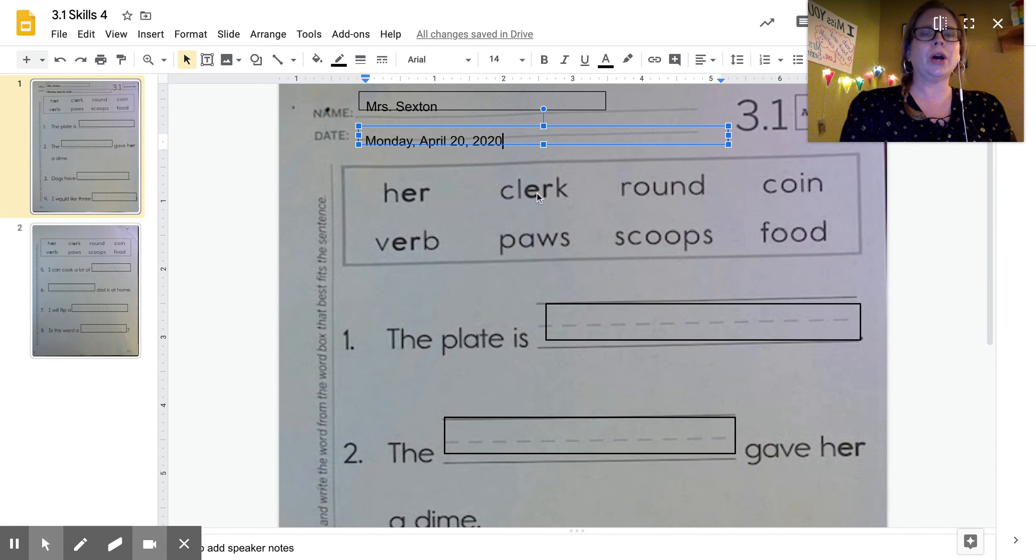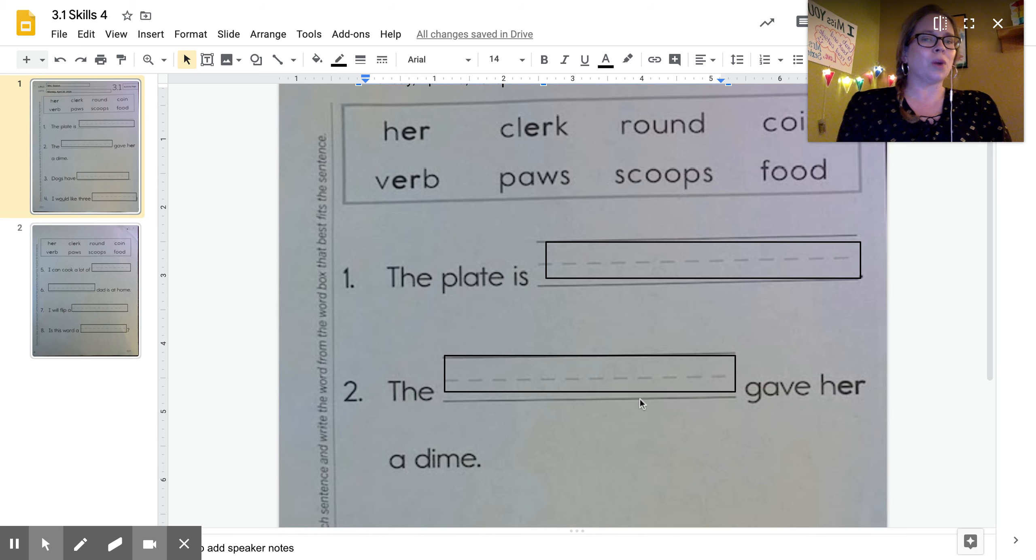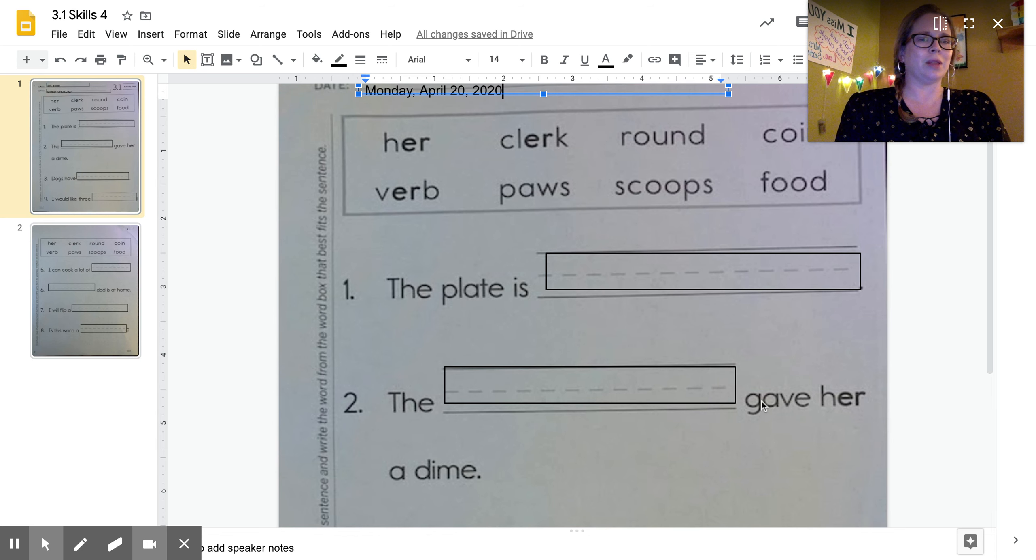So first I'm going to read those words. Let's see if we can point to them: her, clerk, round, coin, verb, paws, scoops, food. Let's read them again, you read with me this time: her, clerk, round, coin, verb, paws, scoops, food.